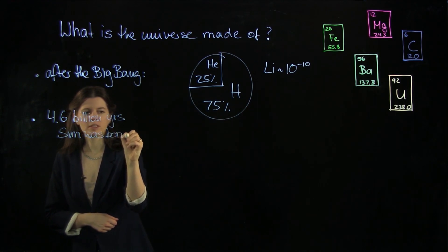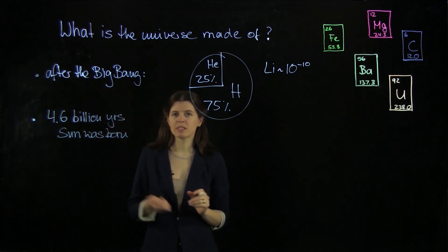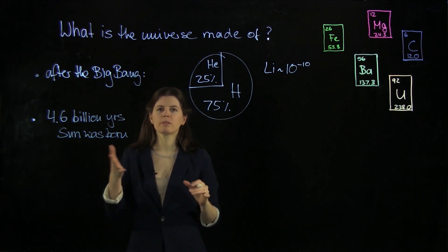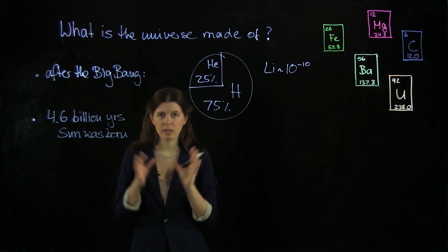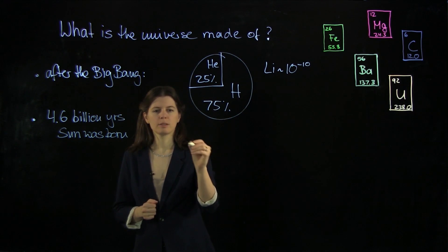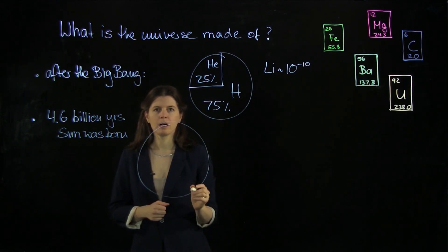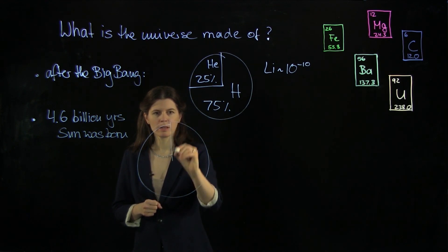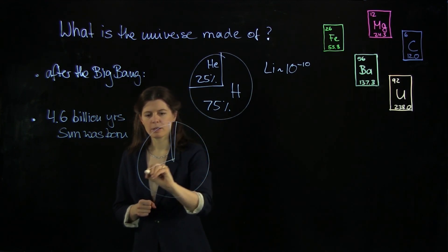And from studying the chemical composition of the Sun, as I will explain later, we can deduce what the universe was made of at that time. And as it turns out, the universe looked a little bit different in its composition. It looked something like this.